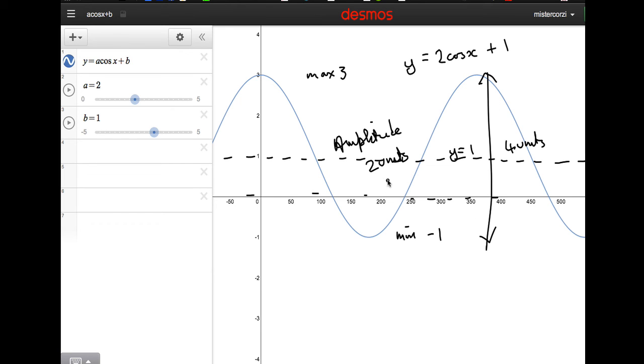So I hope that helps in the solution to this question. So let's go back to the question now. So in the case that we're given here, we have a maximum of 2, we have a minimum of minus 4. The gap between maximum and minimum is 6 units. Half of that will give us the amplitude, 3 units. So A equals 3.